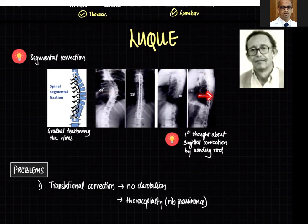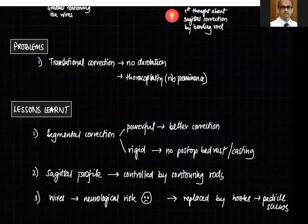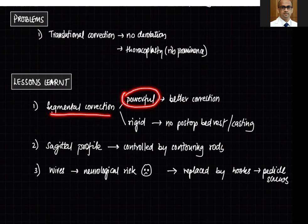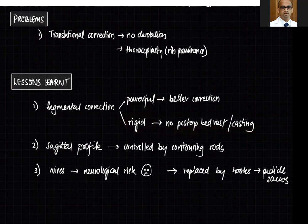The problem with this instrumentation was that it was only a translational correction — there was no derotation. Since scoliosis is a three-dimensional deformity, rib prominence was not corrected and many patients required a thoracoplasty. The lessons learned were that segmental correction was quite powerful, resulting in better correction than Harrington instrumentation. It was very rigid and did not require post-operative bed rest or casting.